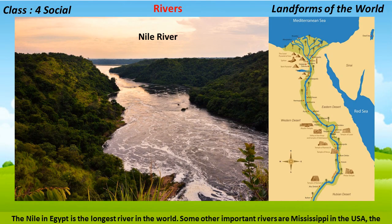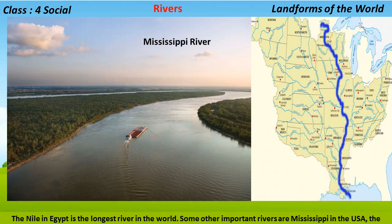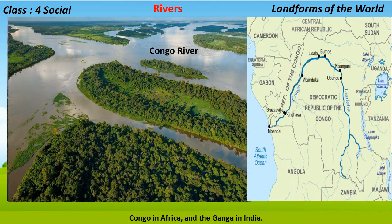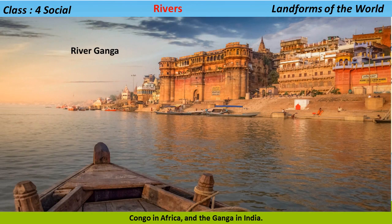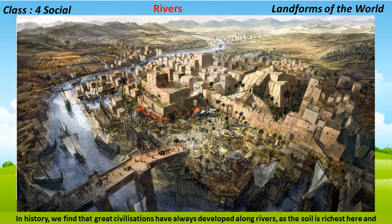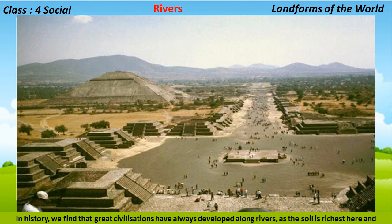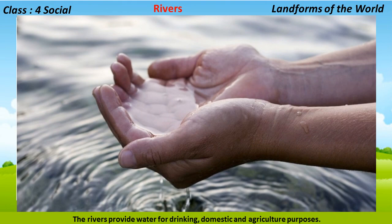The Nile in Egypt is the longest river in the world. Some other important rivers are the Mississippi in the USA, the Congo in Africa, and the Ganga in India. In history, great civilizations have always developed along rivers, as the soil is richest there and rivers provide water for drinking, domestic, and agricultural purposes.